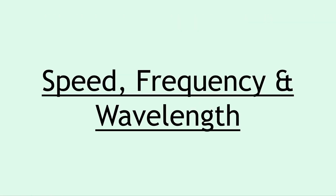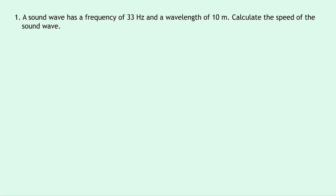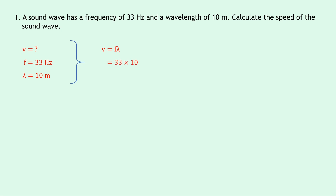We're now going to look at three examples relating speed, frequency and wavelength. Question one says a sound wave has a frequency of 33 hertz and a wavelength of 10 meters. Calculate the speed of the sound wave. Frequency is 33 hertz and wavelength lambda is 10 meters. Writing down our equation v = fλ and substituting in — no prefixes so we're good to go — 33 times 10 gives an answer of 338 meters per second.